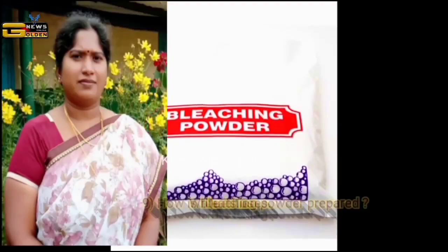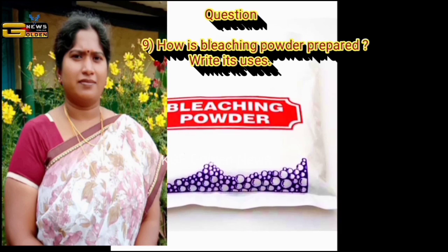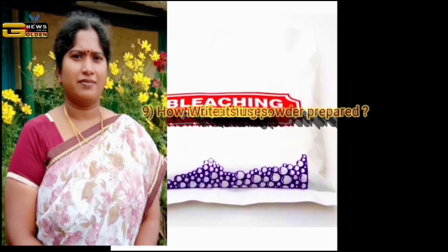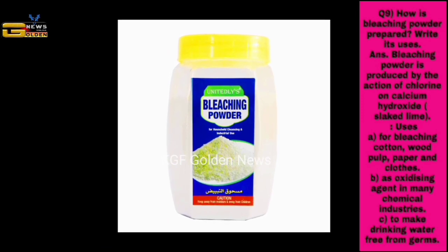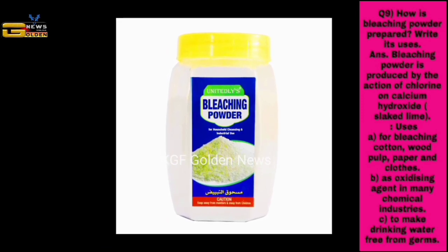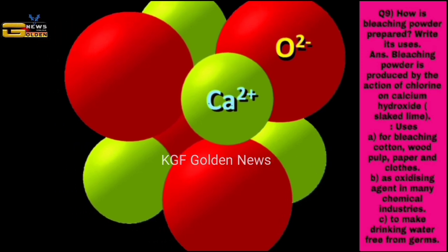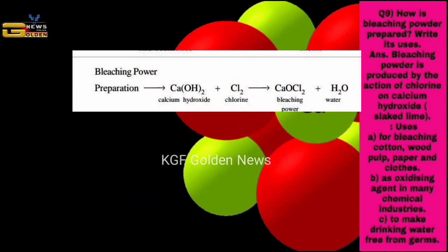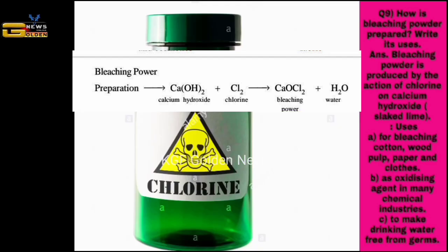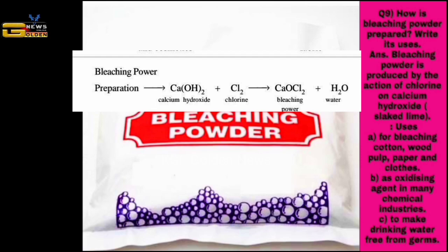Question number nine: how is bleaching powder prepared? Write its uses. The answer is, bleaching powder is produced by the action of chlorine on calcium hydroxide, i.e. slaked lime. Calcium hydroxide reacts with chlorine to form bleaching powder, i.e. CaOCl2, and water.